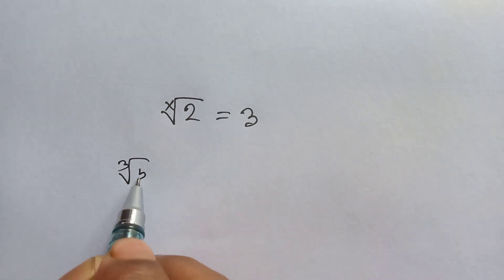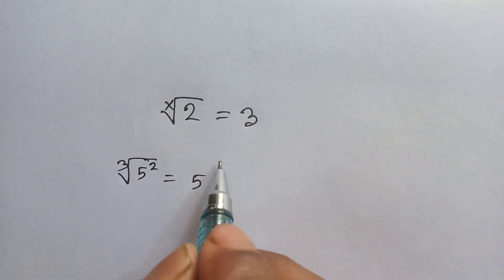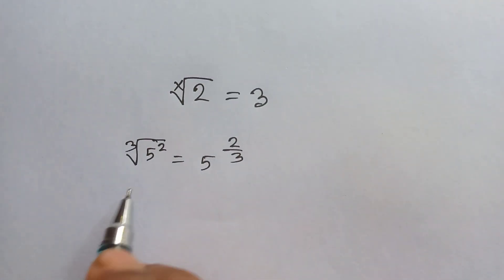And next step, under 5 root 3 to the power 2 can be written as 3 to the power 2 over 5. So according to this, we can write these terms.